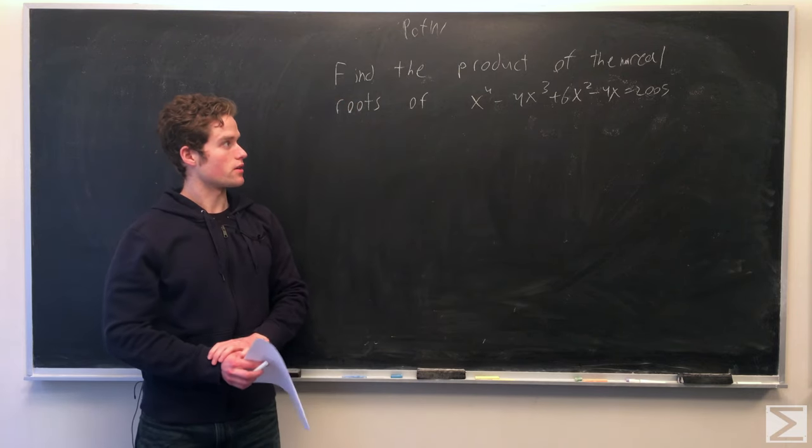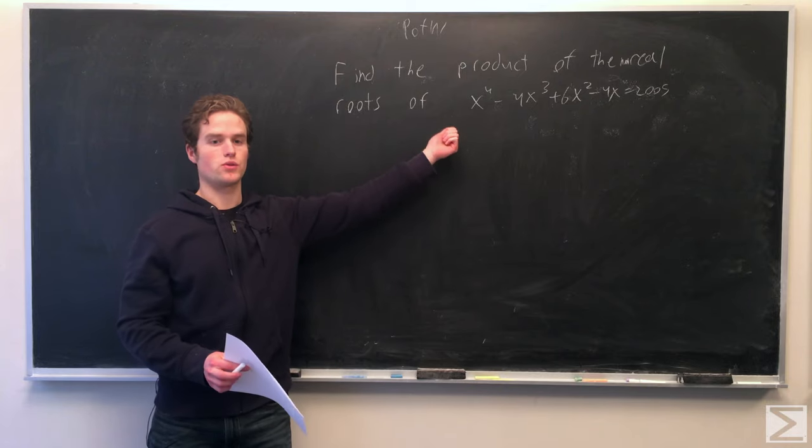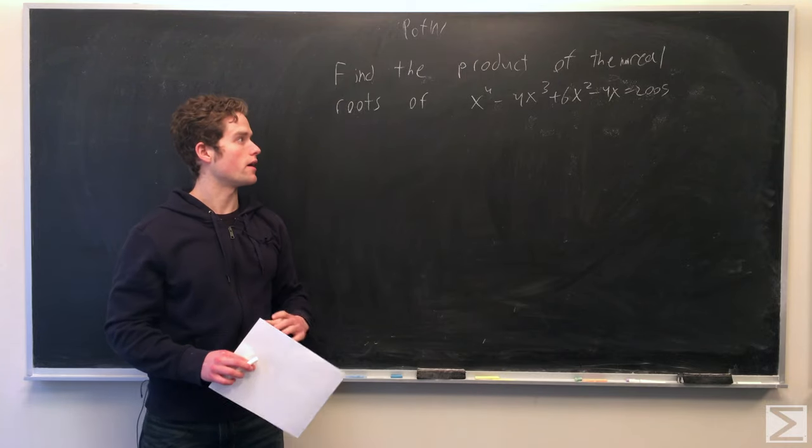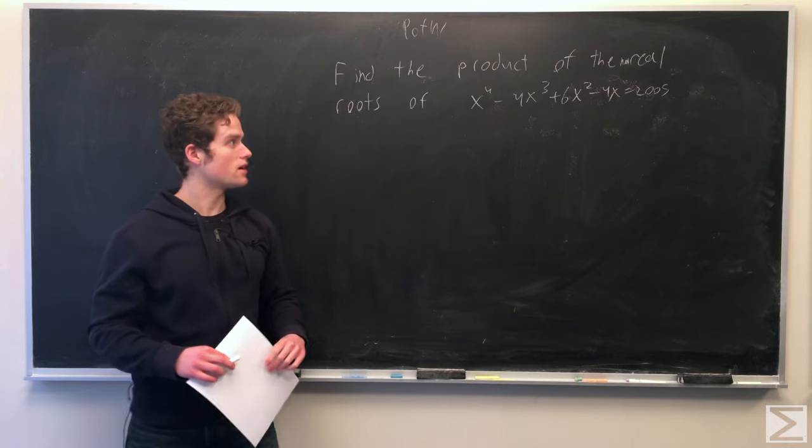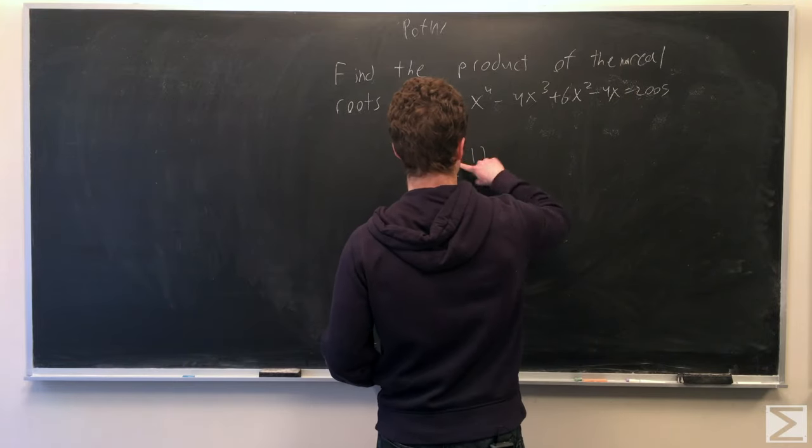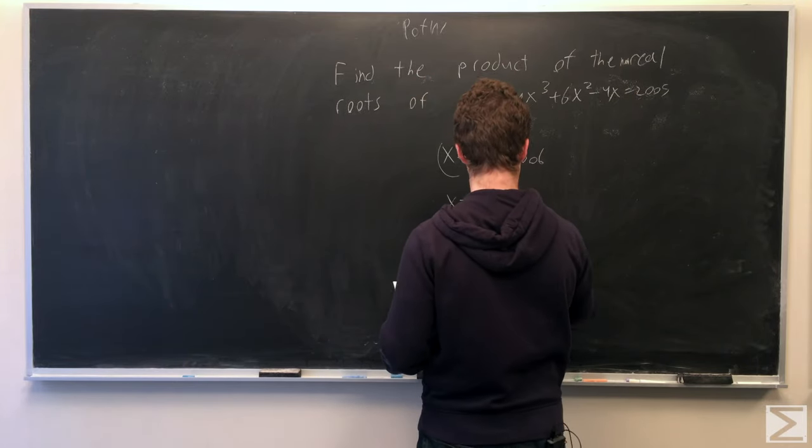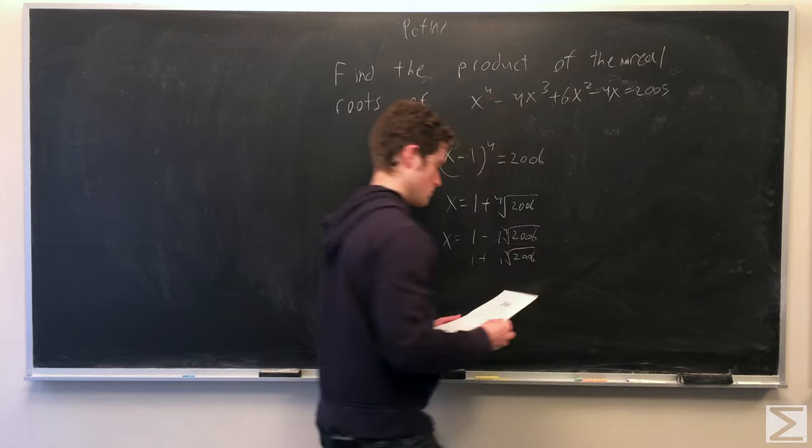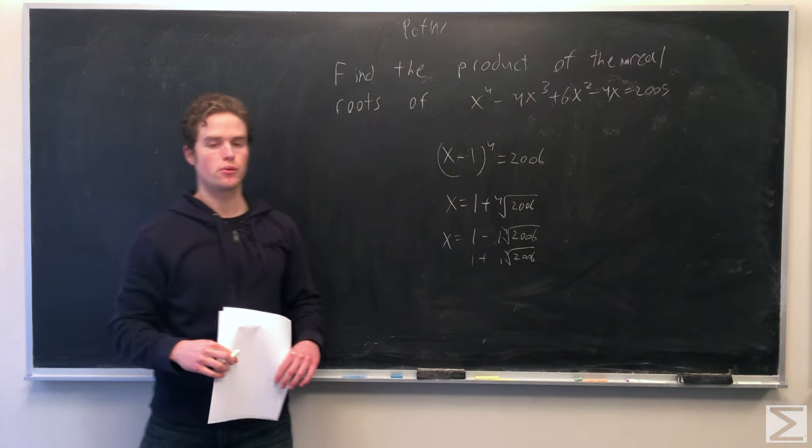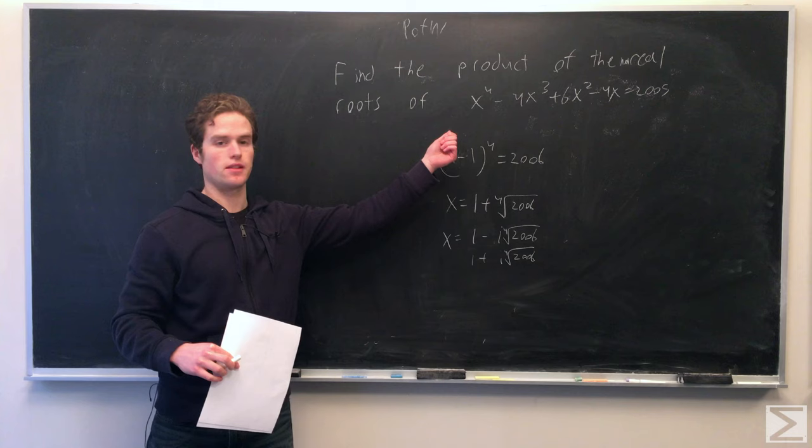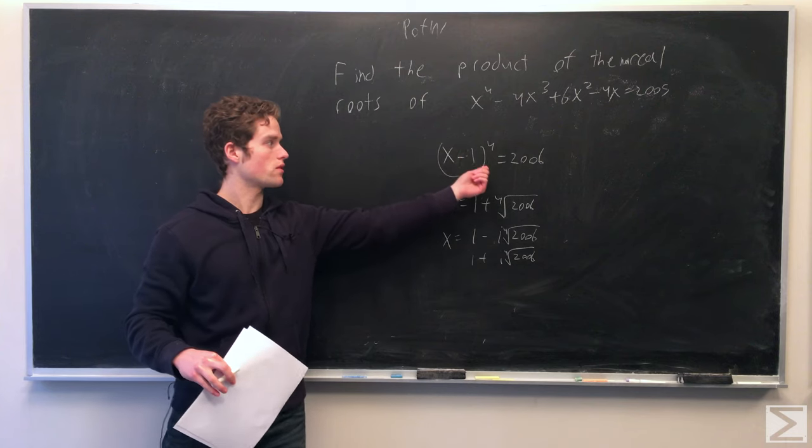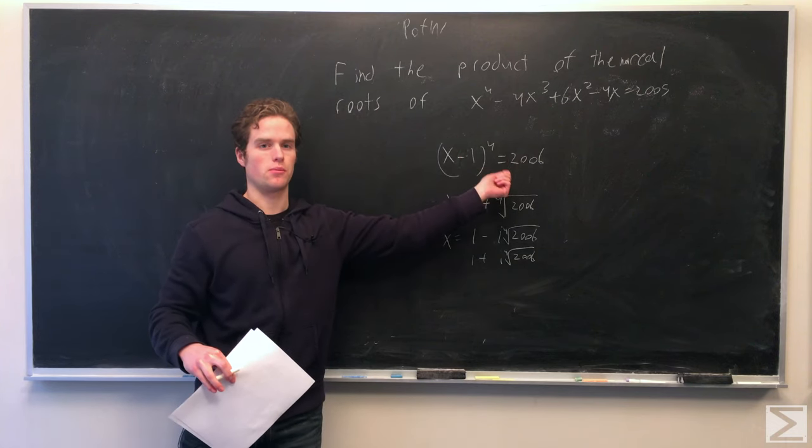So we can make this expression just into x minus 1 to the 4th by adding a 1 to both sides. So by adding 1 to both sides, we can write the left side then as x minus 1 to the 4th equals 2006, 2005 plus 1.